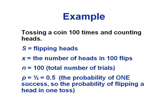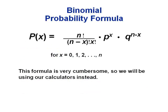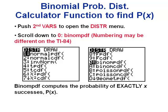For example, tossing a coin 100 times and counting heads: success is flipping heads, x counts the number of heads, n is 100, and p is 0.5 — the 50% chance of flipping heads each time. If we want to know the probability of getting heads 30 of those 100 times, there is a formula, but we're not going to use it. In a more advanced probability course you might, but here we'll use a calculator program and focus on interpreting results.